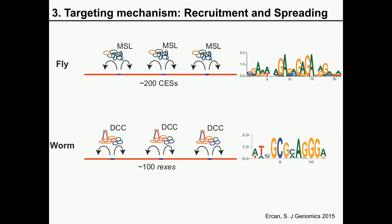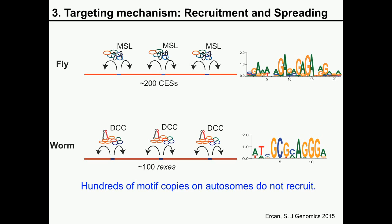These recruitment sites are defined by short DNA sequence motifs, and the motifs are important for specific recruitment — if you mutate them, you abolish recruitment. However, the motifs do not explain the specificity of recruitment because these motifs are also present on the autosomes. In fact, there are hundreds of copies of these motifs on the autosomes, but there they do not recruit the dosage compensation complexes. This context-dependent recruitment is not specific to X-chromosome dosage compensation; in many systems, transcription factors only bind a small percentage of their target sequences.